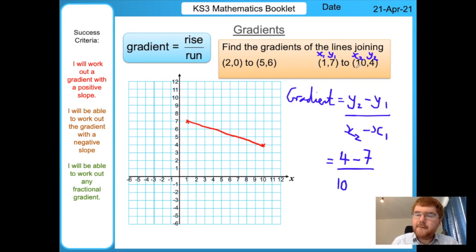Finally, x1 equals 1. If we work this out, 4 minus 7 equals minus 3 (careful with negative numbers), 10 minus 1 equals 9. We simplify our fraction to get minus 1 over 3, which is the same as minus a third, the same answer as the first method.